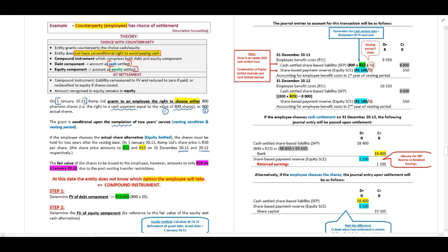The grant is conditional upon completion of two years' service. If the employee chooses the actual share alternative (equity settled), the shares must be held for two years after vesting date. On 1 January 20.11, Compt Limited's share price is R20 per share, rising to R22 and R23 at the end of 20.11 and 20.12 respectively. The fair value of shares to be issued to the employee, however, is only R19 on 1 January 20.11.